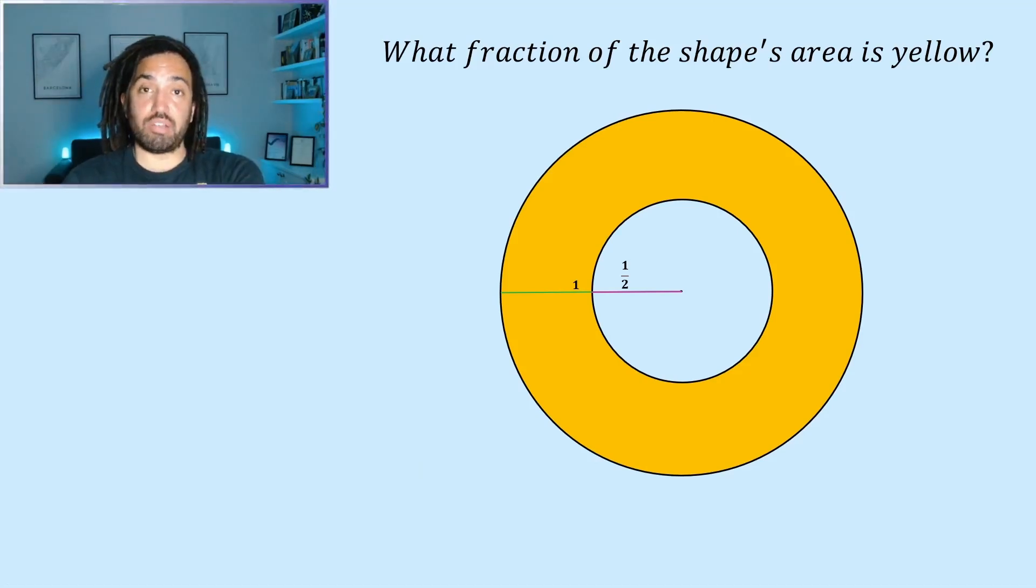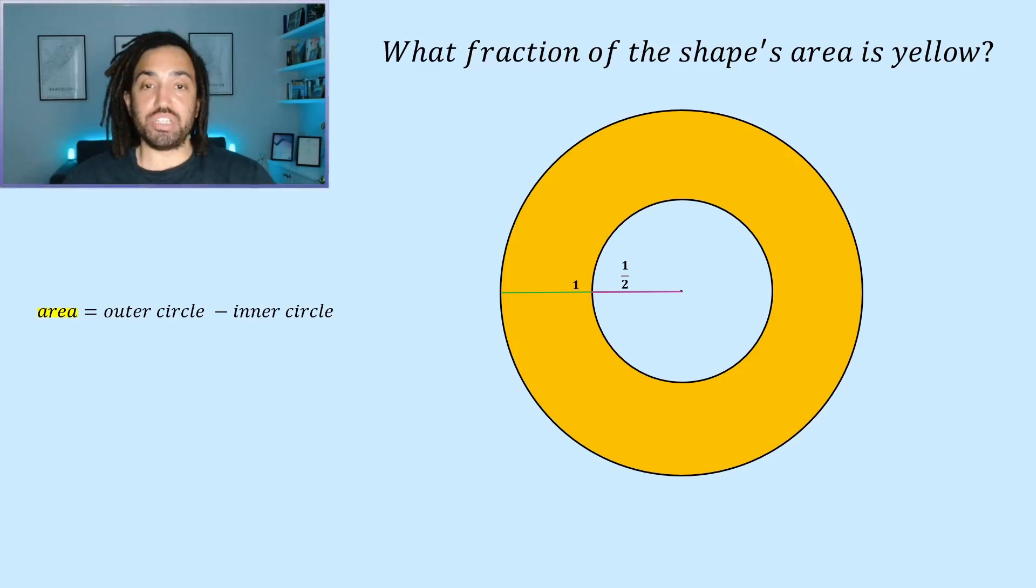So to calculate the area of the yellow ring I will do the outer circle minus the inner circle and using the formula for the area of a circle pi r squared we will get pi times one squared minus pi times a half squared which gives pi minus a quarter pi so the area of the yellow ring is three quarters pi.